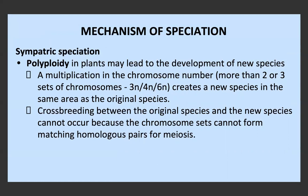This creates a new species in the same area as the original species because the original diploid (2n) species and this new polyploid species (3n, 4n, etc.) cannot crossbreed — the chromosome sets can't form matching homologous pairs. For example, if a triploid plant tried to reproduce with a diploid plant, there would be an extra set of chromosomes without a pair, and they cannot produce fertile offspring, so they are reproductively isolated.